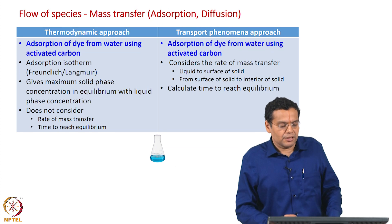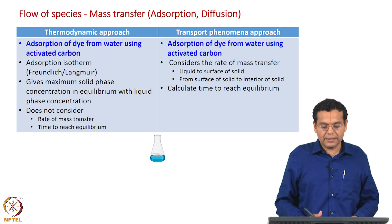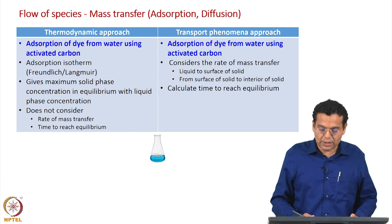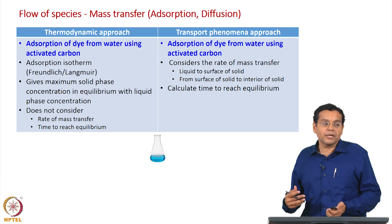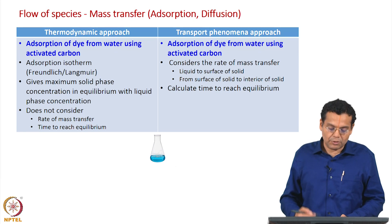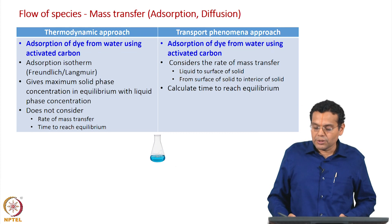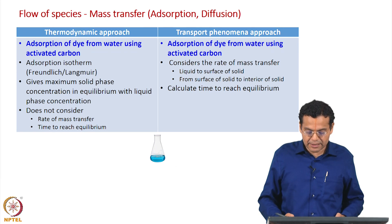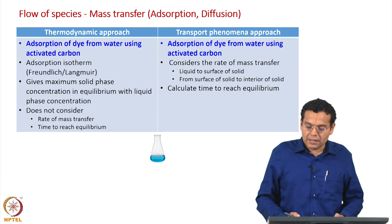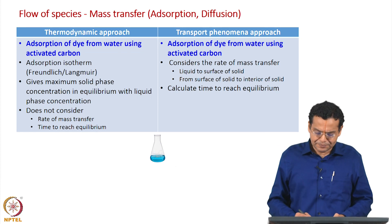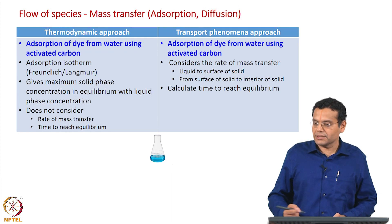A practical example related to wastewater treatment: suppose you have colored water and want to remove color using an adsorbent like activated carbon. Thermodynamics tells you the maximum concentration in the solid phase at equilibrium, but does not consider rate of mass transfer or how long it takes to reach equilibrium. Using a transfer phenomena approach, you consider the rate of mass transfer — from the bulk liquid to the solid surface, and from the surface to the interior of the solid — and you can find out the time required to reach equilibrium.